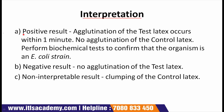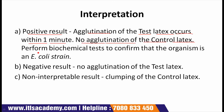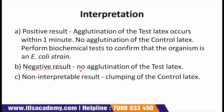Interpretation. Positive result: agglutination of the test latex occurs within one minute, and no agglutination of the control latex. Perform a biochemical test to confirm that the organism is an E. coli strain. Negative result: no agglutination of the test latex. Non-interpretable result: clumping of the control latex.